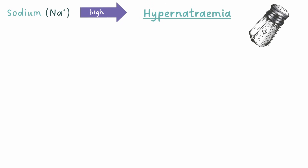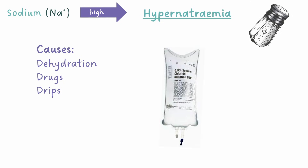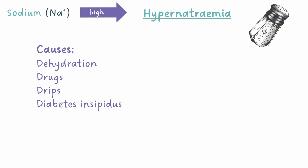You can remember the causes of hypernatremia using the four D's: dehydration, drugs (for example sodium-containing effervescent tablets), drips (i.e. too much IV saline), and diabetes insipidus, which is a lack of anti-diuretic hormone that results in the inability to retain enough water.